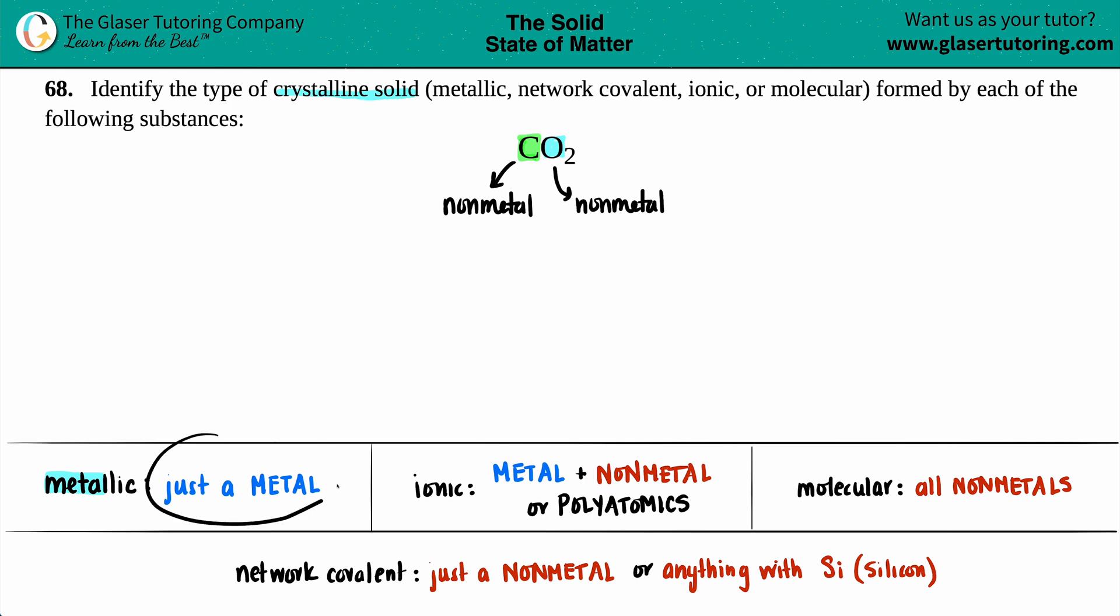I don't have just a metal, so we'll pass on metallic crystalline solid. Let's go to ionic crystalline solid. Ionic crystalline solids come from ionic compounds—remember back in Gen Chem 1? An ionic compound is always between a metal and a non-metal, or polyatomics. But no metals here. I've got two non-metals, so that's out.